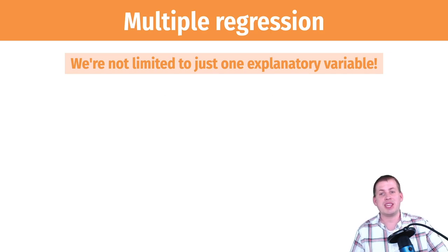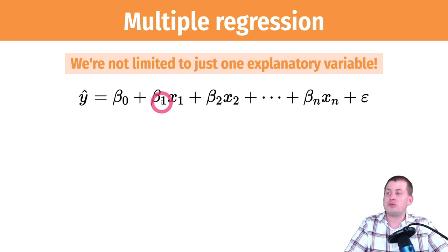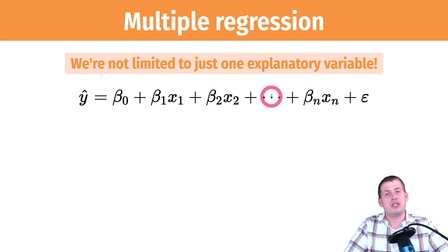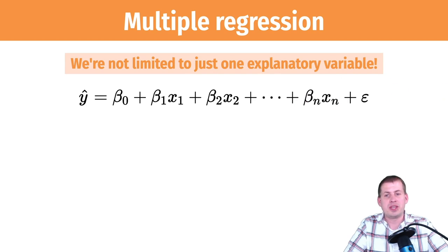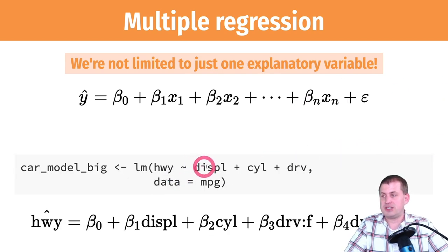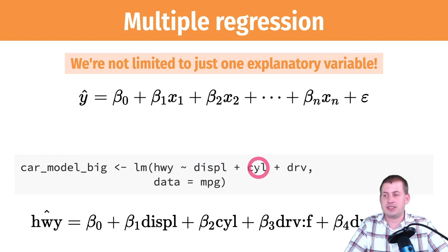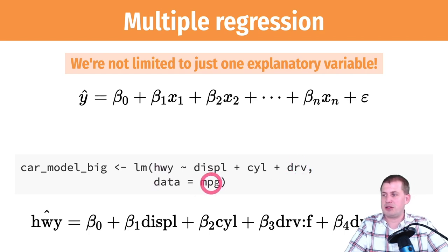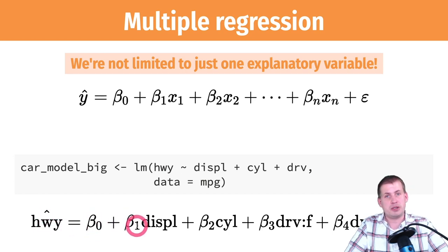You can throw in lots of explanatory variables — instead of just β1x1, you can do β1x1 + β2x2 + β3x3 + ... as many as you want. Doing that in R is fairly easy: just separate all the explanatory variables with a plus. Here we're explaining highway miles per gallon with displacement, cylinders, and drive (meaning four-wheel, front-wheel, or rear-wheel drive) using the mpg dataset. The math equation becomes: predicted highway = β0 + β1·displacement + β2·cylinders + β3·FWD + β4·RWD.